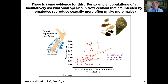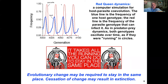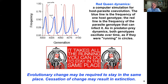The dynamic of the Red Queen shows that the frequency of one host genotype (blue line) and the parasite genotype that can infect it (red line) oscillate over time, just as we see in predator-prey dynamics — both genotypes running in circles. Evolutionary change is required to stay in the same place, and cessation of this evolutionary change can result in extinction.